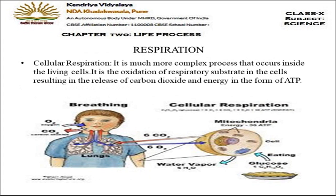Cellular respiration occurs in each and every cell of our body. It is the oxidation of the respiratory substrate — oxidation means the burning of food in the presence of oxygen, and the respiratory substrate here means glucose. So cellular respiration is the oxidation or burning of glucose in the presence of oxygen, which results in the production of CO₂, water, and the release of a lot of energy in the form of ATP — adenosine triphosphate — the molecule in which energy is stored.